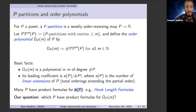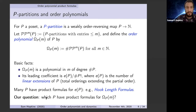The quantity e(P), the number of linear extensions, is of great interest — many people want product formulas for it, such as the hook length formula for Young diagram shapes. But I'm focusing on a more restrictive problem: which posets have product formulas for their entire order polynomials? Since just one coefficient of the order polynomial is the number of linear extensions, it's a smaller class of posets that have product formulas for the full order polynomial.